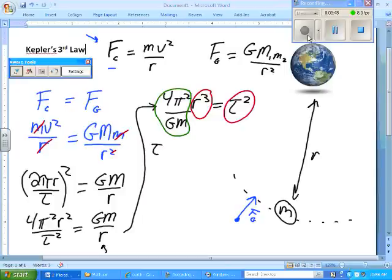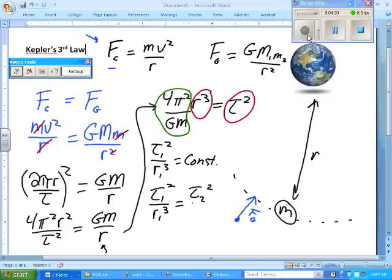I can say tau squared over r cubed is equal to constant. So any tau and any r would equal the same constant of 4 pi squared over GM. And I put little subscripts 1 because that means you can make relations between two different planets within the same system, like so. And that is Kepler's third law.